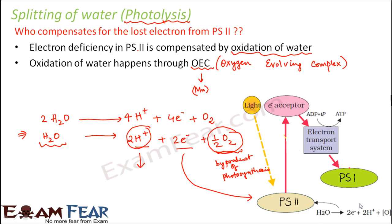This splitting of water or photolysis takes place near PS2. The photosystems are located in the thylakoid membranes. Inside the stroma, you have the thylakoids arranged in stacks. In the thylakoid membranes, PS1 and PS2 are located, and the process of electron excitation and electron transport system all take place there. Looking at the structure of a thylakoid, it has a membrane with PS1, the electron transport chain, and PS2.